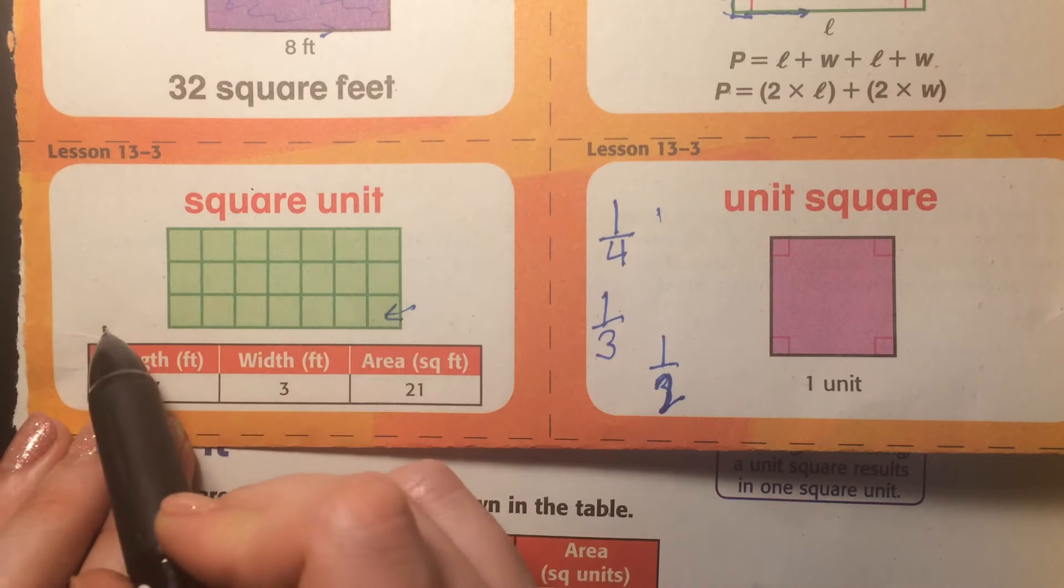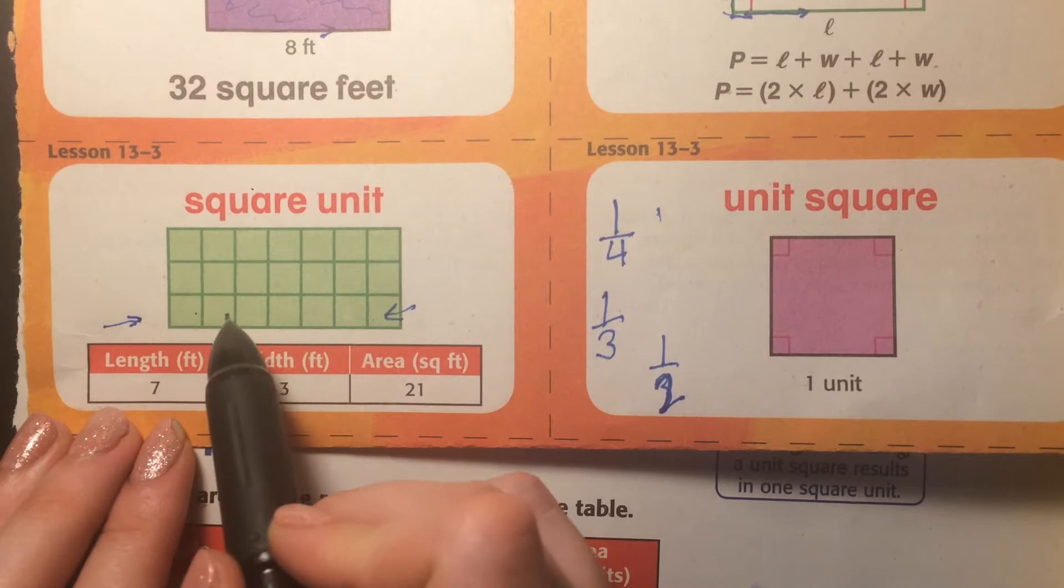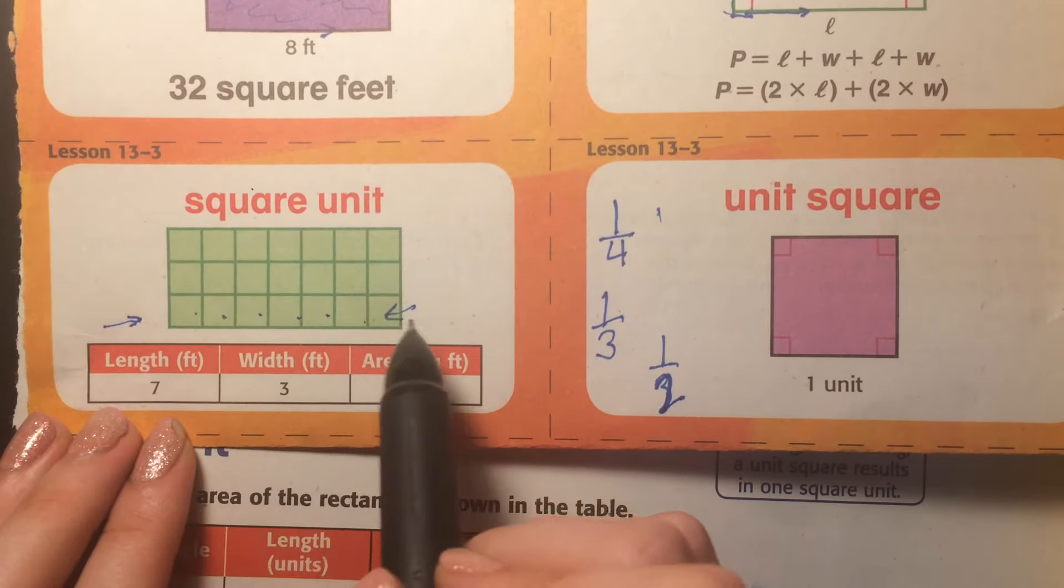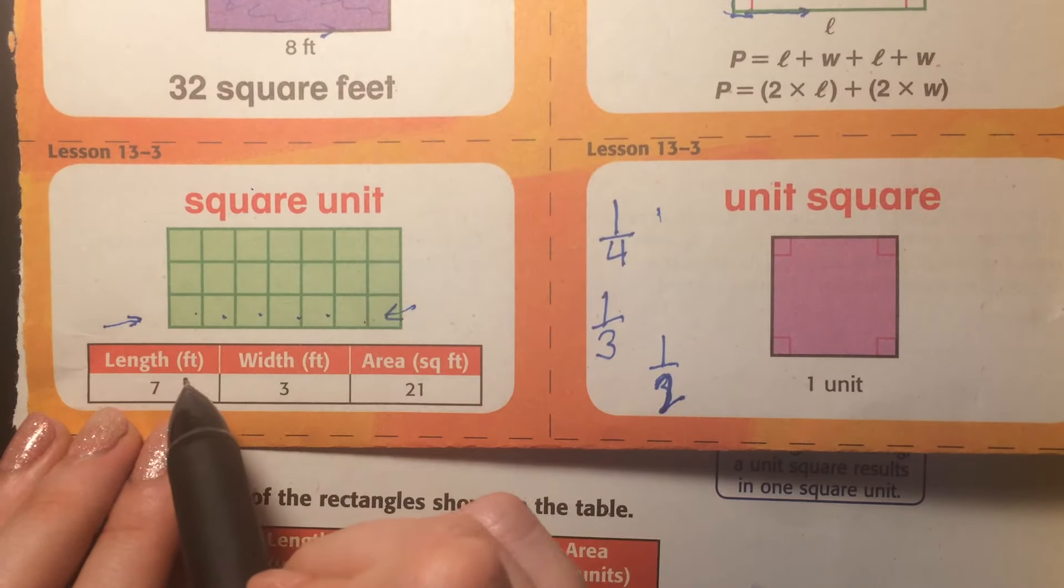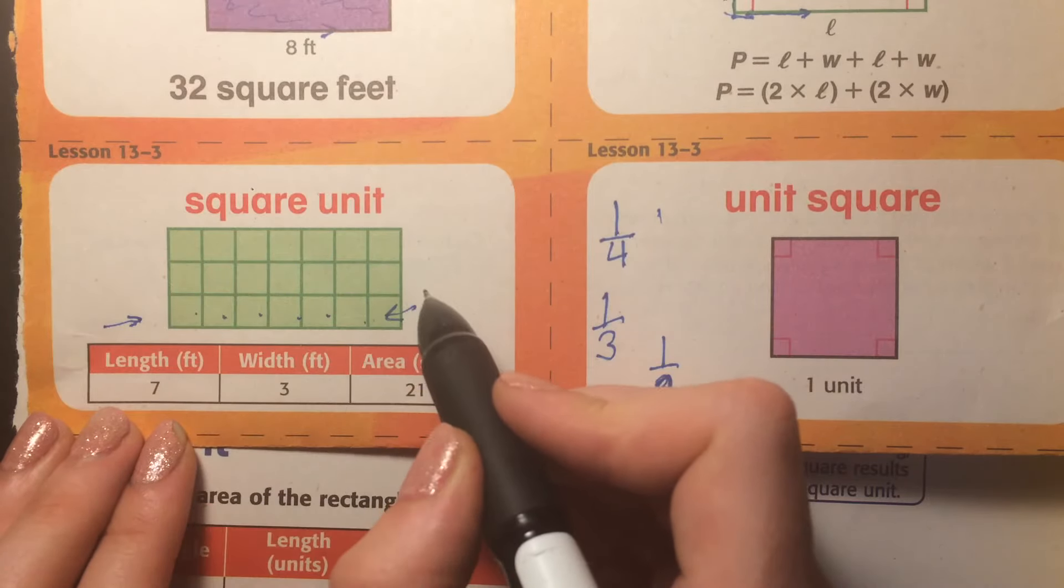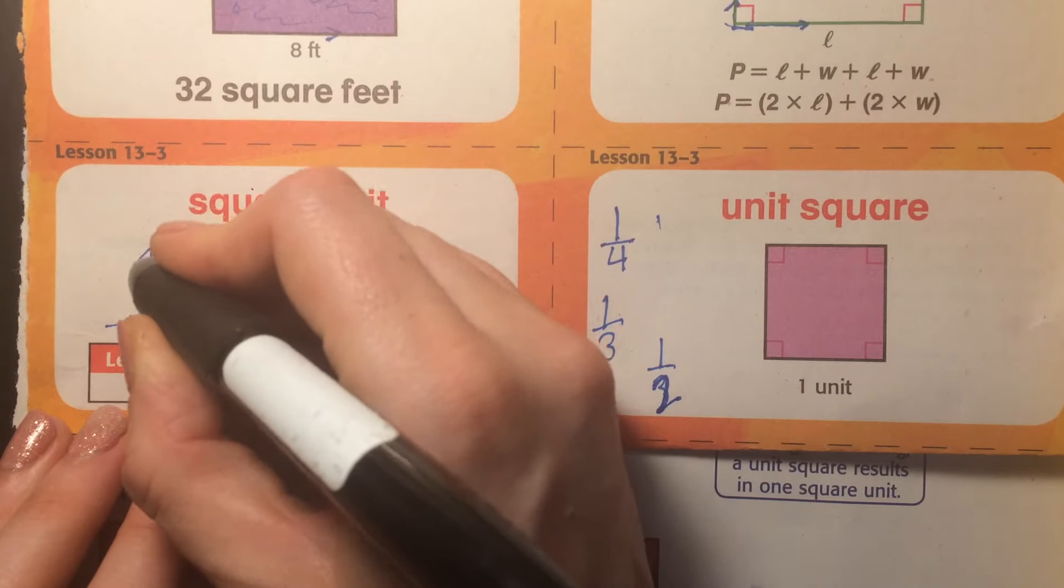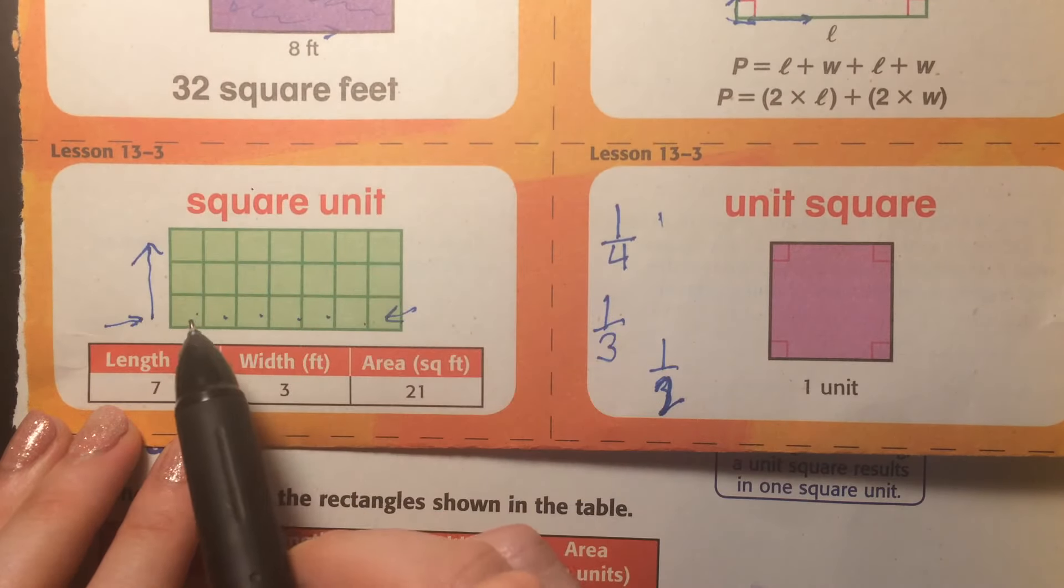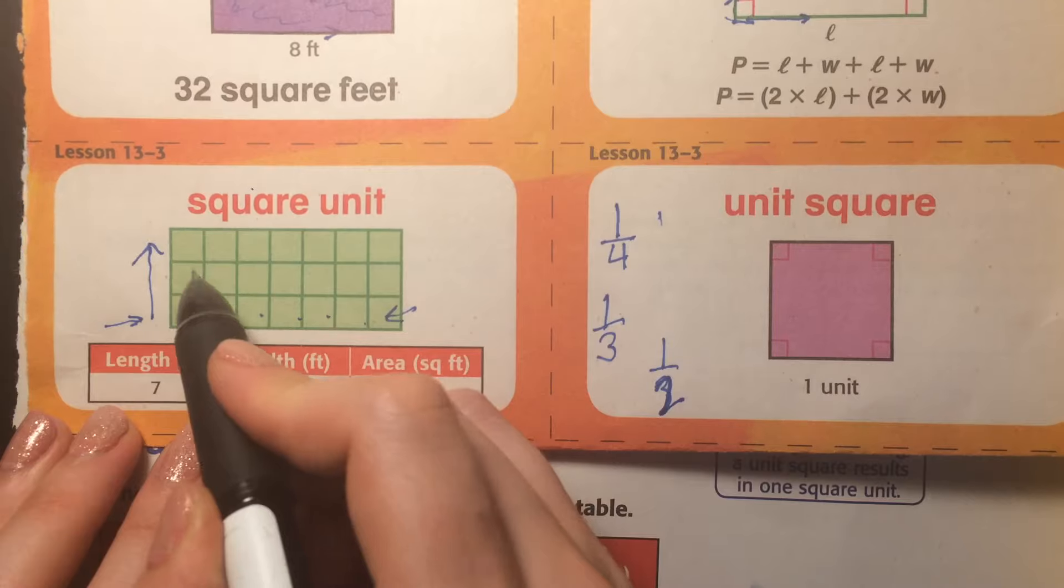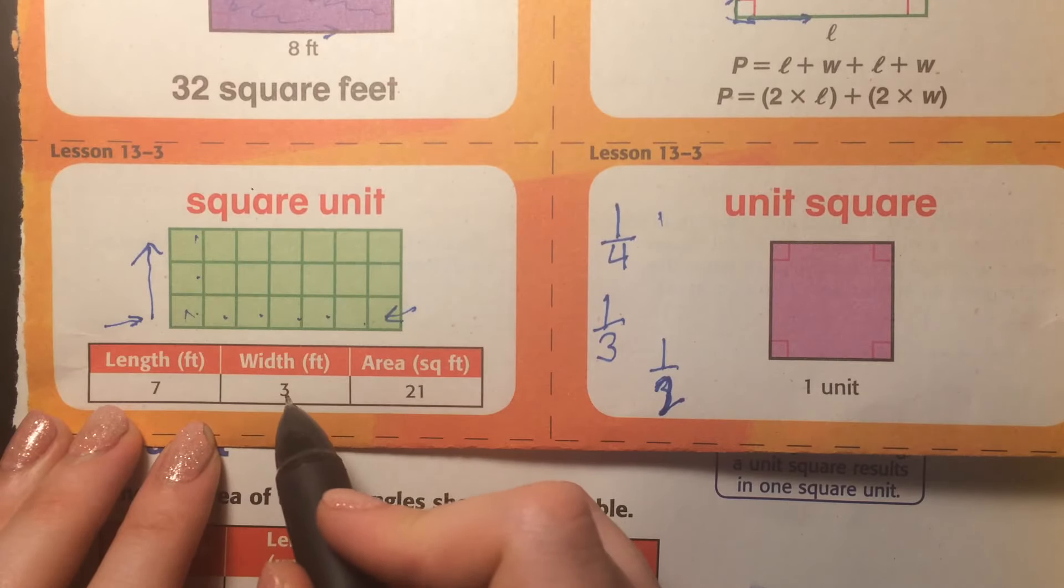So this is the length, which is going this way. One, two, three, four, five, six, seven. Seven is the length, and this happens to be feet. And the width, remember width is going up. That is one, two, three. So the width is three.